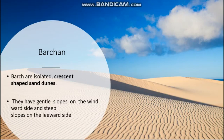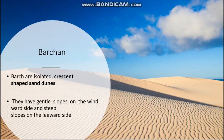Barchan or isolated crescent-shaped sand dunes have gentle slopes on the windward side and steep slopes on the leeward side. If the wind blows continuously, the slope on the opposite side of the wind will be very steep. They have gentle slopes on the windward side and steep slopes on the leeward side.